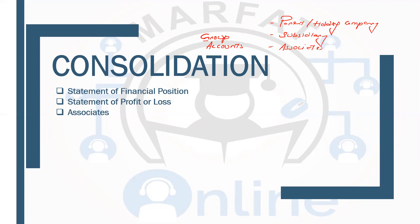In our syllabus, we have three things. We will see the parent company, the subsidiary, and the associates. So in our syllabus, we cover these three entities within the consolidation topic.